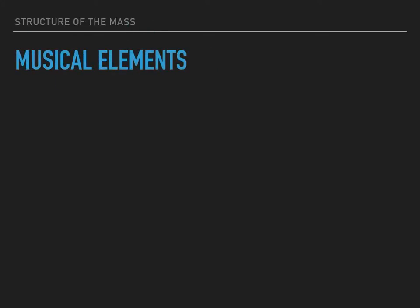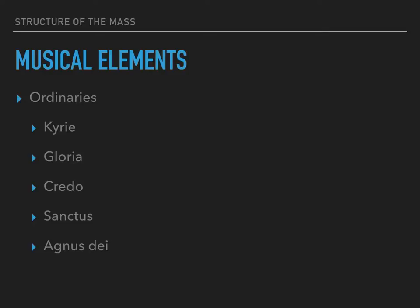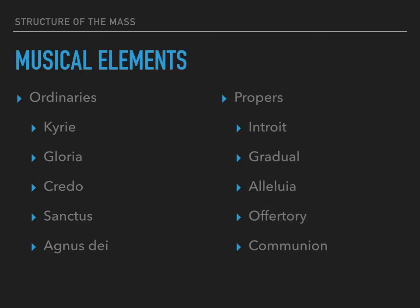Now that we've gone through the four parts of the Mass, let's look at the musical elements. There are two types. First, we have the Ordinaries — those five elements: the Kyrie, the Gloria, the Credo, the Sanctus, and the Agnus Dei. The ordinary parts of the Mass are those things which stay the same for each Mass; the text doesn't vary at all. Every time Mass is done, those same words are used. They're called the Ordinaries because they're ordinarily used. The other type is called the Propers — those things which do change from Mass to Mass, from day to day and Sunday to Sunday, reflecting upon the gospel and the readings chosen for that particular day.